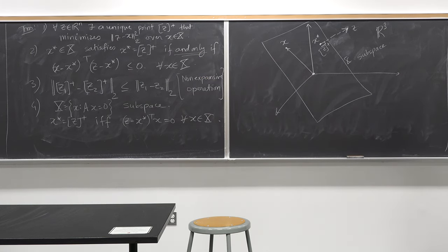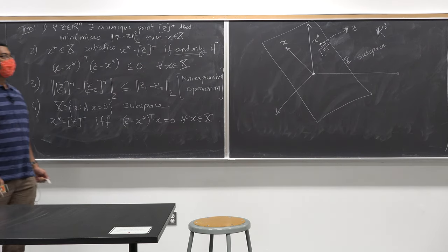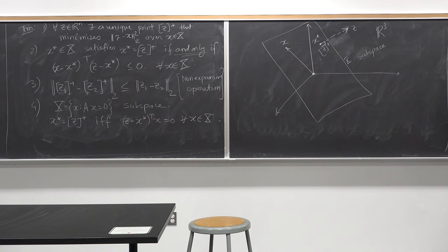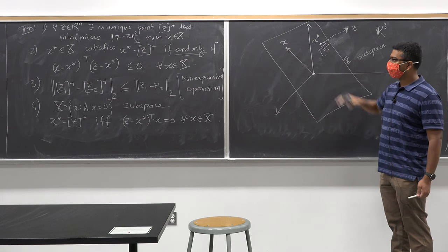A student asks: if the subspace is in R3 and I take a point outside this convex space, would the condition still be zero? The answer: if the plane is not passing through the origin, then it's not a subspace — it's called a linear variety or a hyperplane. If you move this plane up or down so it doesn't pass through the origin, it's no longer a subspace. Both 'hyperplane' and 'linear variety' are mathematical ways to refer to such a plane not passing through the origin.